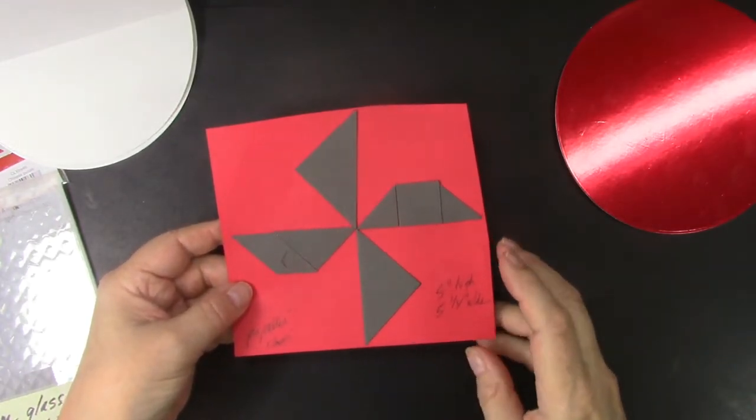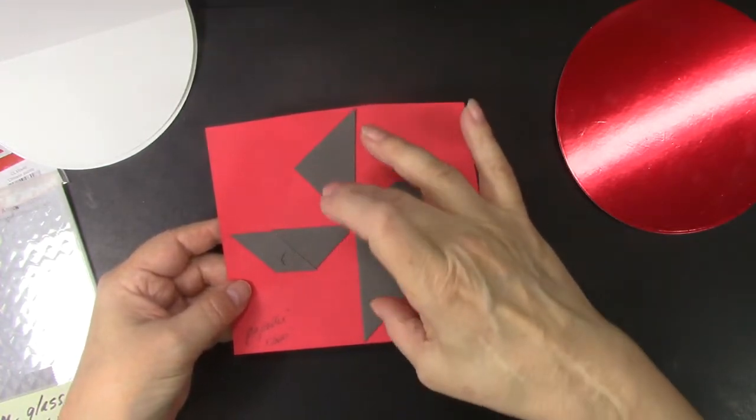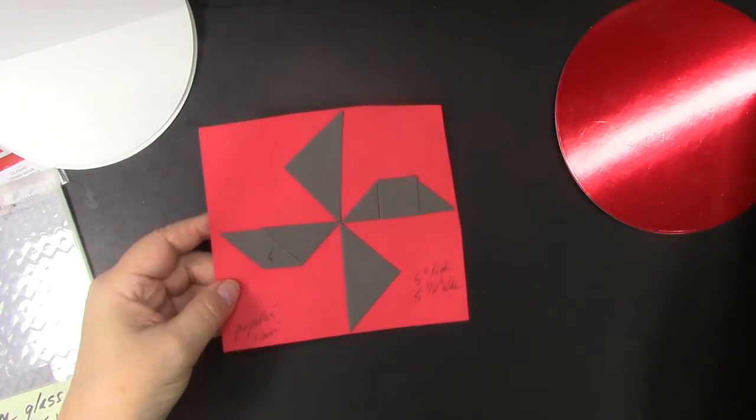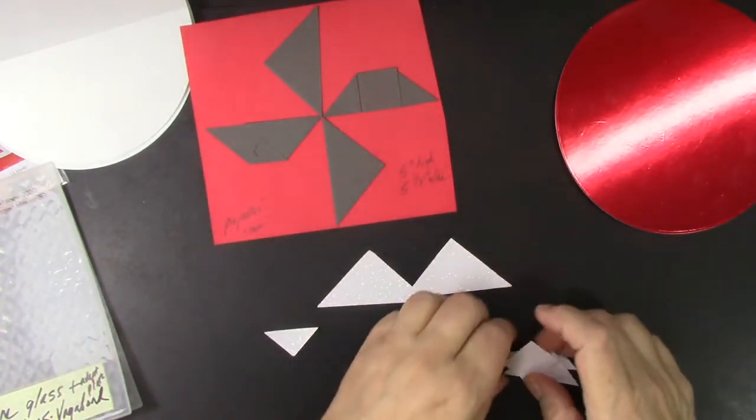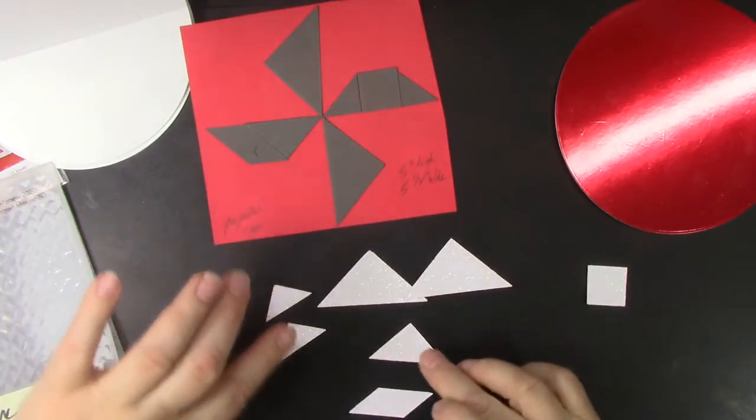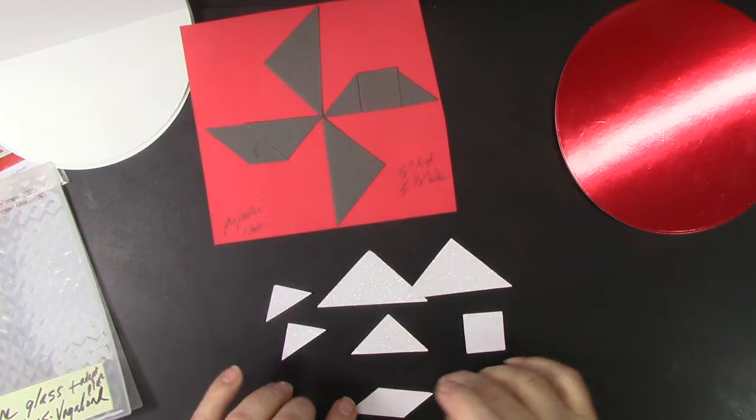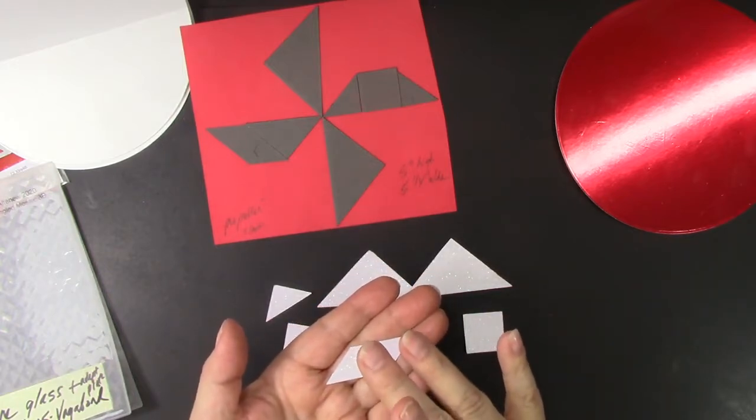It is interesting also to note that there is obviously two triangles. So here's the pieces I'm going to use to make the flower. There's two large triangles. There are two smaller triangles. There's a medium size. There's a square. And then this is a parallelogram.